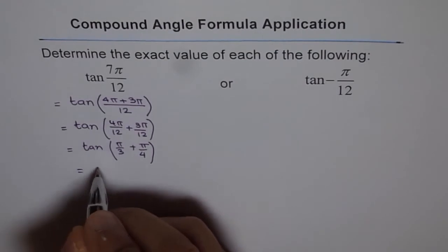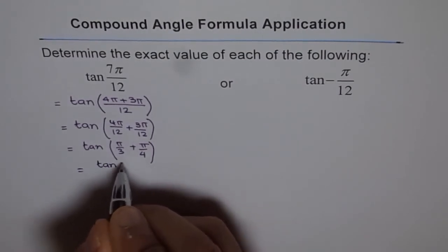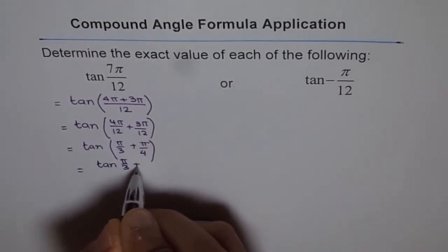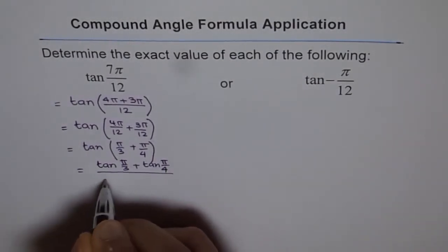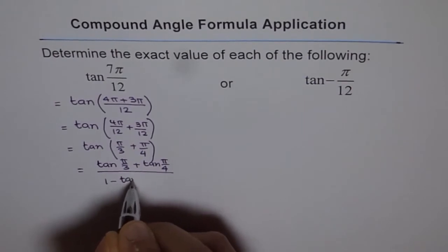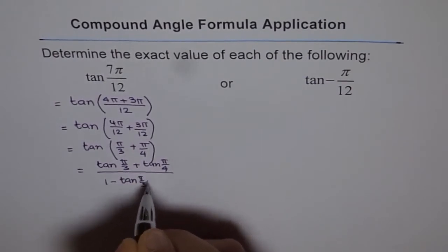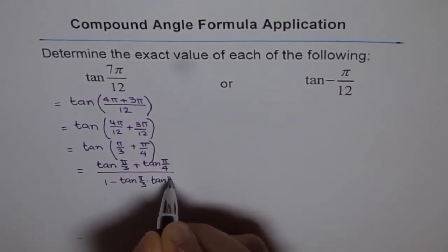So we get tan π/3 plus tan π/4 divided by 1 minus tan π/3 times tan π/4.